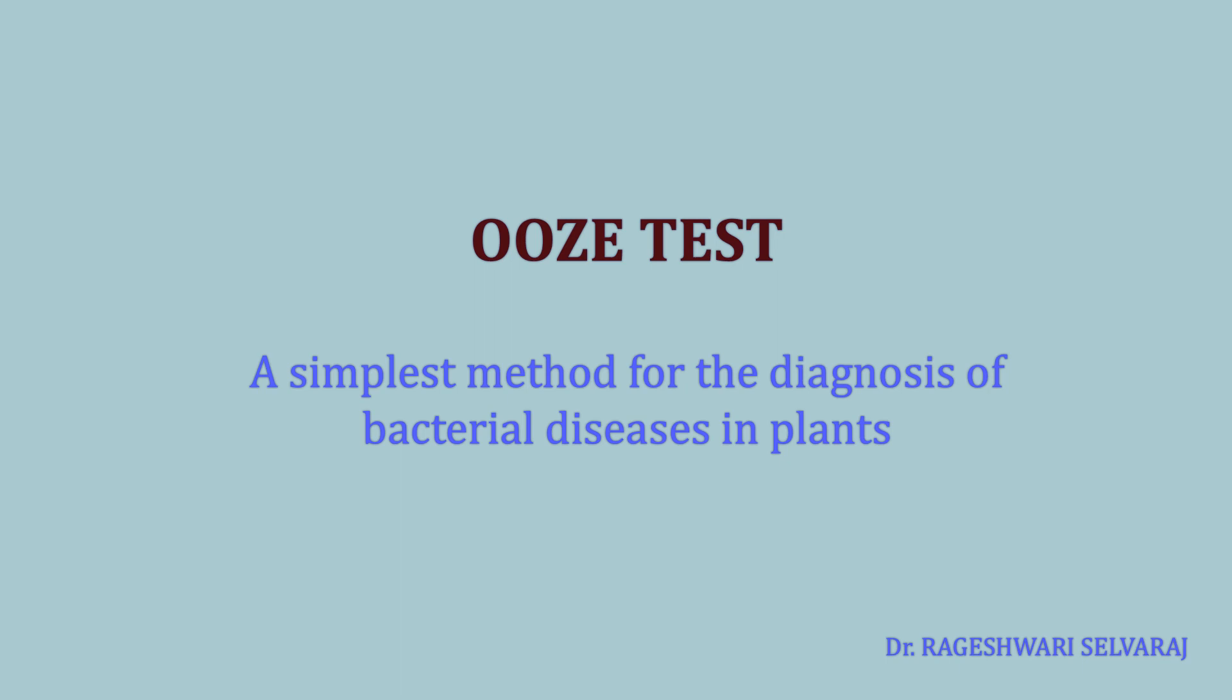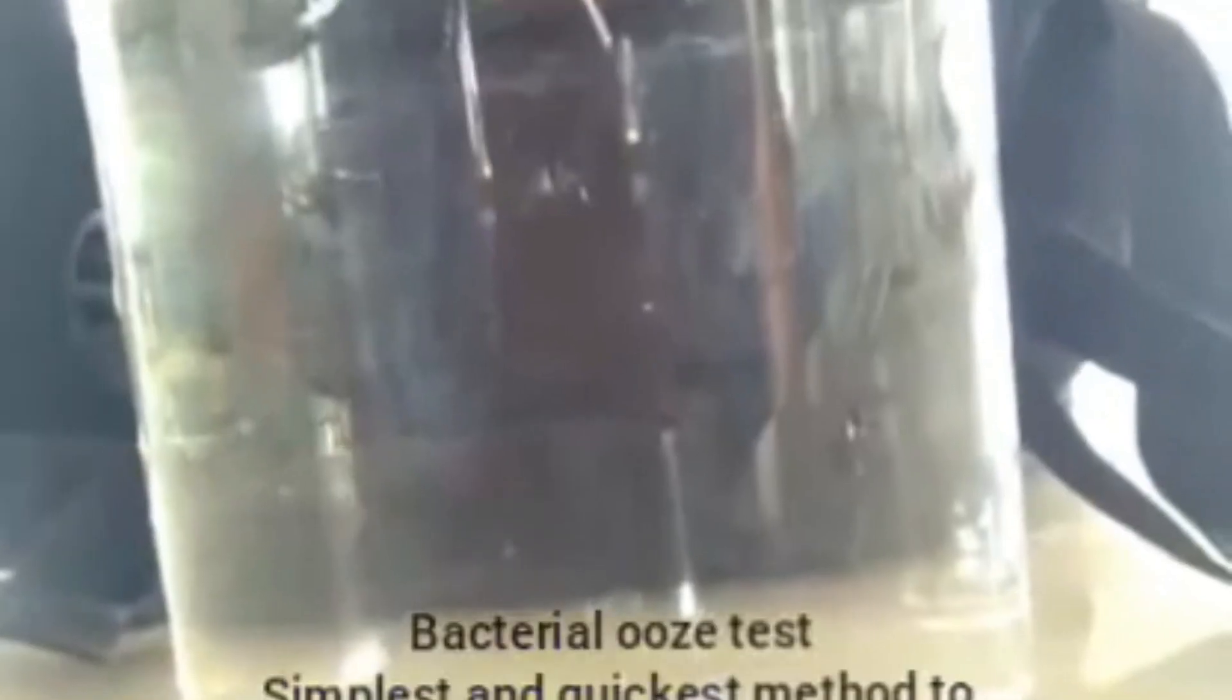Ooze test, a simplest method for the diagnosis of bacterial diseases in plants. Bacterial ooze test is the simplest and quickest method for the detection of bacterial diseases in field conditions.